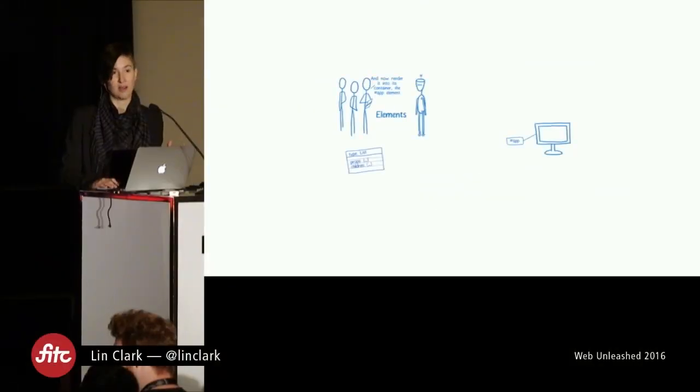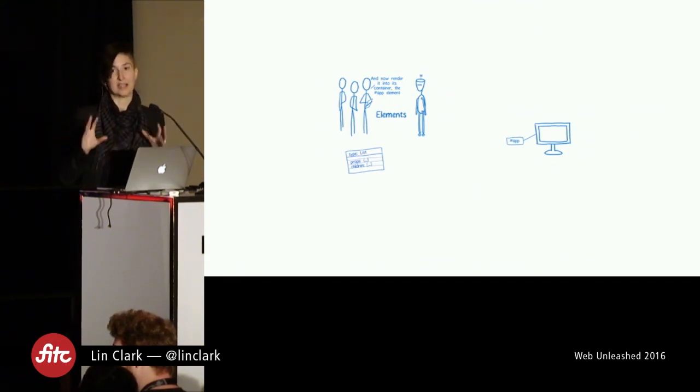Your code asks for an element, React creates it, and then your code tells React to start rendering that element into the container. This begins construction of React's render tree. I should note that this algorithm has changed since I started writing this talk, and it's going to change again — the React team is actually working on a vastly different version of the rendering algorithm. But as of right now, this is how it works.